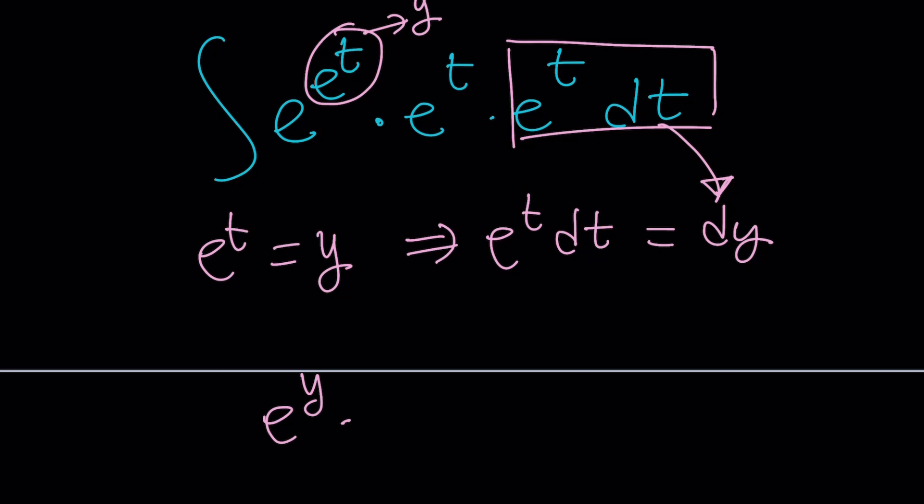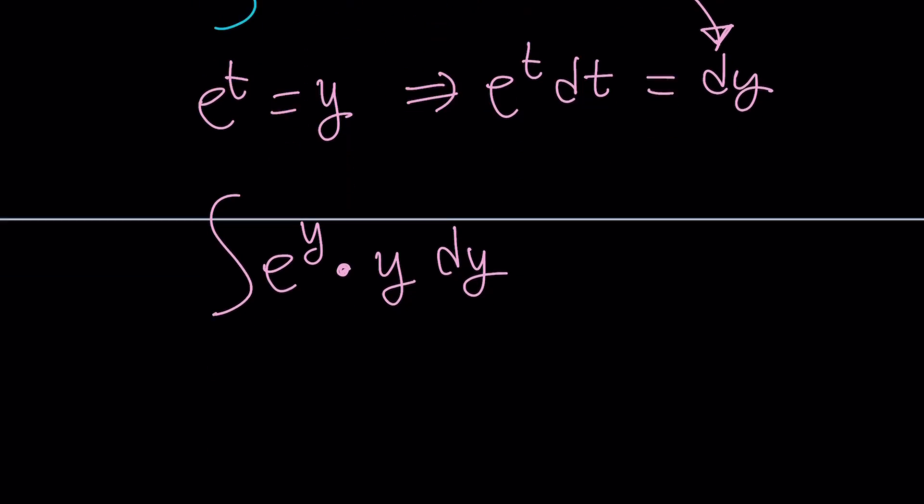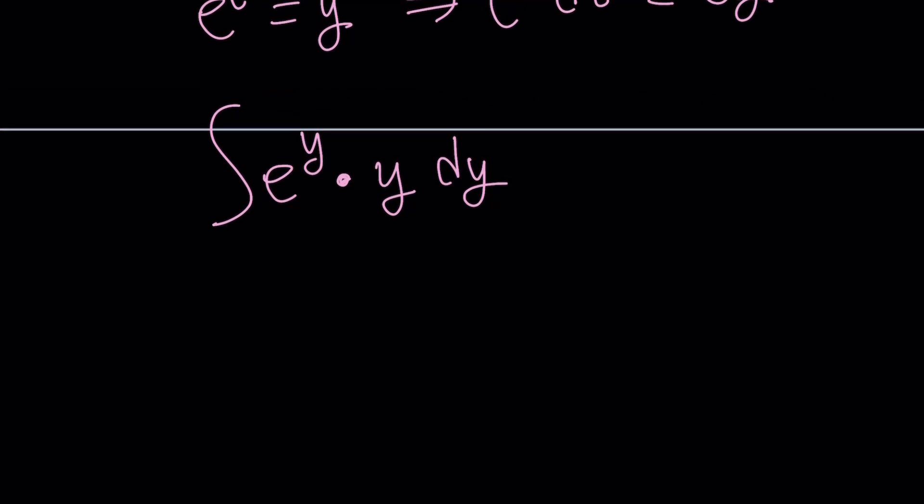So, what am I doing? I have e to the y times y, right? Because e to the t is y, times dy. Awesome. This is much better, don't you think? E to the y times y dy. Great. So, let's see how we can evaluate this. And this is actually either di or you can call integration by parts.